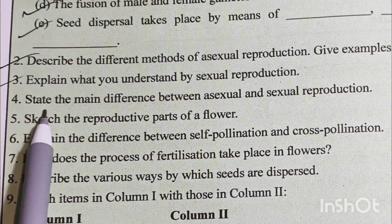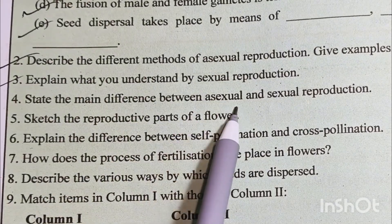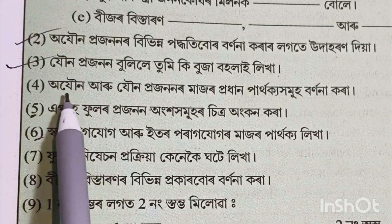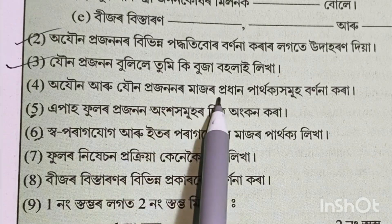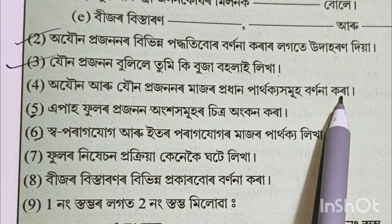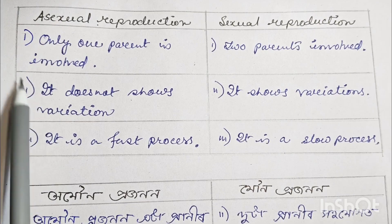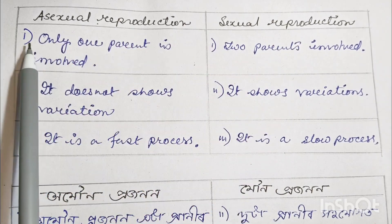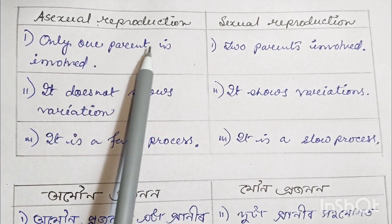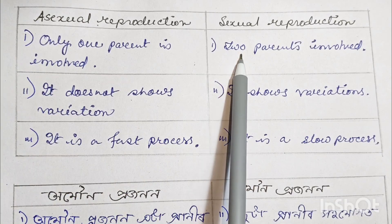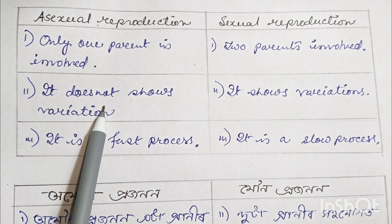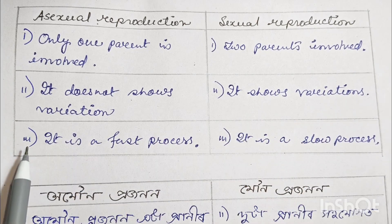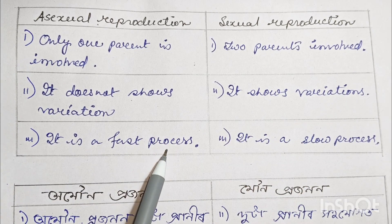Number 4: State the main difference between asexual and sexual reproduction. Asexual reproduction: Number 1 — only one parent is involved. Number 2 — it does not show variation. Number 3 — it is a fast process.